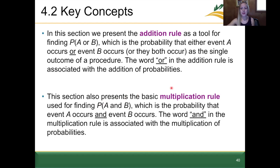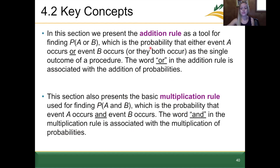When we have the multiplication rule, we're going to say the probability of event A and B occurring. The word 'and' in the multiplication rule means we're going to be multiplying the probabilities of A and B together. Whereas for the addition rule, we're going to add the probabilities of event A and B occurring.